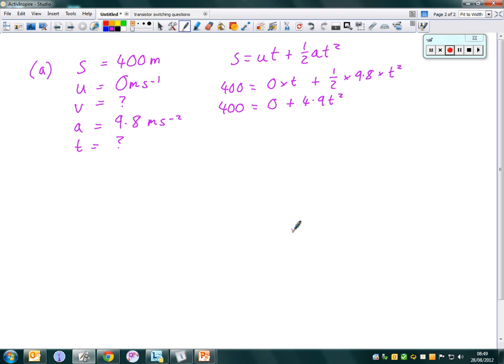So 4.9t squared is equal to 400. So we can then get a value for t squared from that, from 400 divided by 4.9. You should find that your value for t comes out as 9.04 seconds.